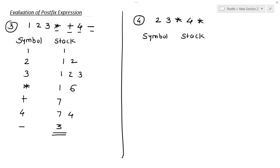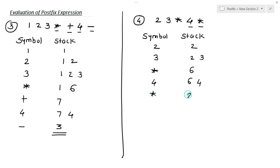Let's see another example: 2 3 multiplication 4 multiplication. The first symbol is 2, added into the stack. The second is 3; in the stack we have 2 and 3. The next symbol is multiplication; we multiply 2 and 3 to get 6. Then 4 is added; in the stack we have 6 and 4. Then multiplication: 6 multiplied by 4 equals 24. This is our final answer for this postfix expression.